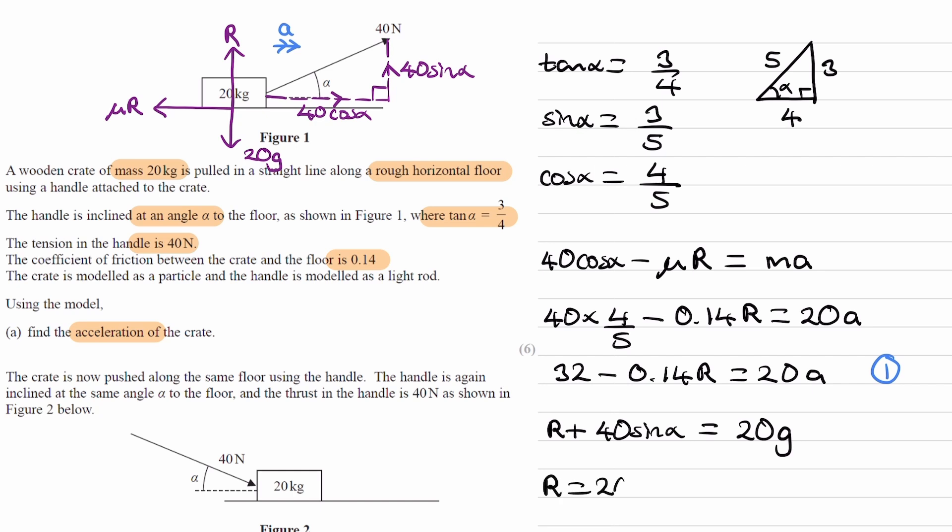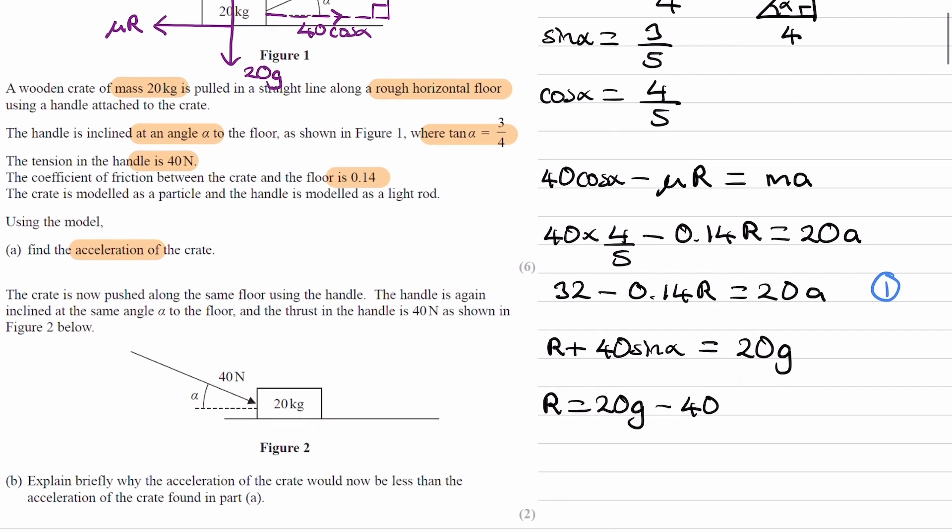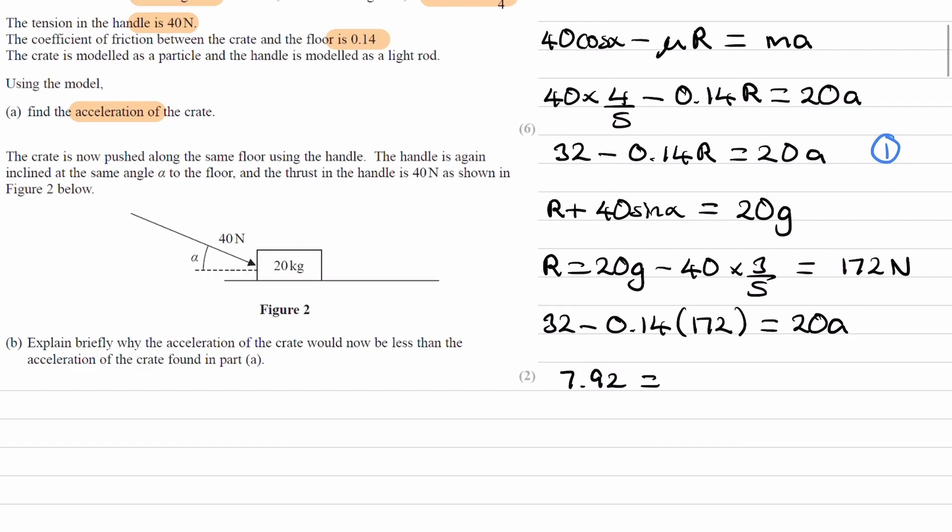From this we can work out what R is, so R is equal to 20g minus 40 sin alpha. Sin alpha was 3/5. Type this in, then we get 172 newtons. So now we know what R is, we can put that back into equation 1. 32 minus 0.14 times 172 equals 20a. That becomes 7.92 equals 20a. Acceleration is then 7.92 over 20, which is 0.396 meters per second squared.